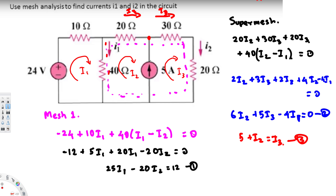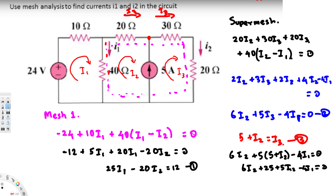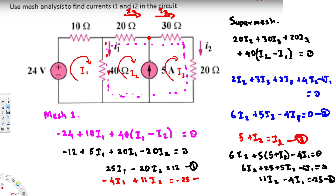We can substitute equation three into equation two: replace i3 with (5 + i2), giving 6·i2 + 5·(5 + i2) minus 4·i1 = 0. Expanding: 6·i2 + 25 + 5·i2 minus 4·i1 = 0. Adding like terms gives 11·i2 minus 4·i1 = negative 25, or equivalently: negative 4·i1 + 11·i2 = negative 25. This is equation four.